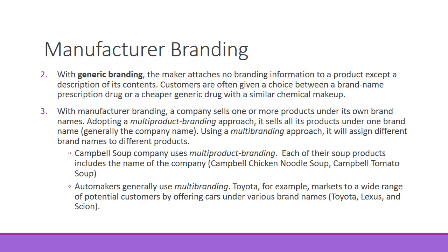Number three, manufacturer branding — a company sells one or more products under its own brand name. Adopting a multi-product branding approach, it sells products under one brand name, generally the company name. Using a multi-branding approach, it assigns different brand names to different products. Campbell Soup Company uses multi-product branding — each soup includes the company name: Campbell Chicken Noodle Soup, Campbell Tomato Soup. Automakers generally use multi-branding. Toyota markets to a wide range of customers under various brand names: Toyota, Lexus, and Scion. You may not even realize the Lexus you're driving is actually a Toyota product.